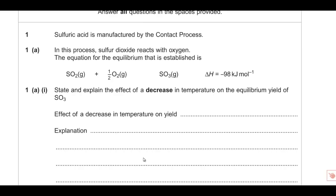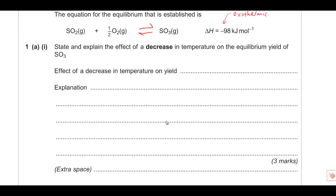The first question is about equilibria - sulfuric acid and the contact process. We react sulfur dioxide with half a mole of oxygen to form sulfur trioxide. There should be an equilibrium sign in the equation. We're given an enthalpy value; the negative enthalpy change tells us we have an exothermic reaction. The question asks us to state and explain the effect of a decrease in temperature on the equilibrium yield of SO3.